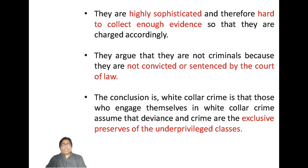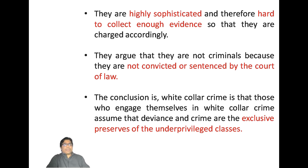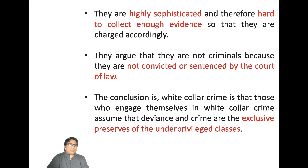In conclusion, those who engage in white-collar crime assume that deviance and crime are the exclusive preserve of the underprivileged class. These white-collar criminals are in a position to shift the blame onto the poor or underprivileged, labeling them as criminals. The bottom line is that if detected at all, white-collar criminals are rarely prosecuted — and corruption itself is often used to escape prosecution.